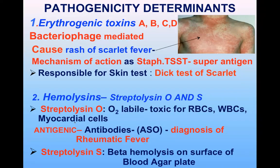The most important toxin is the erythrogenic toxin, responsible for the rash of scarlet fever. Four types have been identified: A, B, C, and D. These toxins are bacteriophage-mediated, meaning only those strains of Strep pyogenes carrying a bacteriophage with genes for erythrogenic toxin are capable of producing scarlet fever.